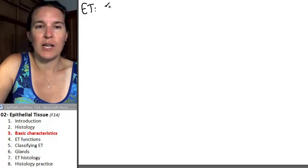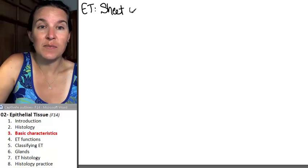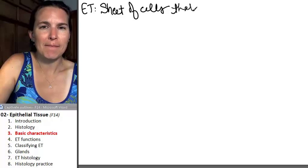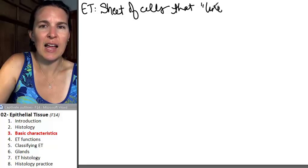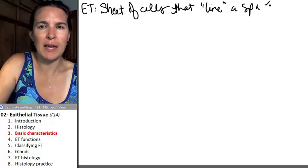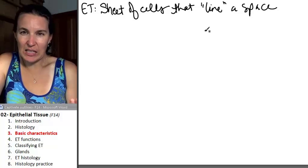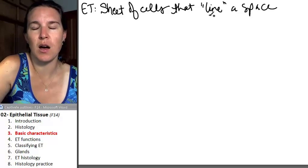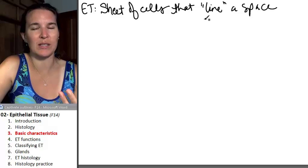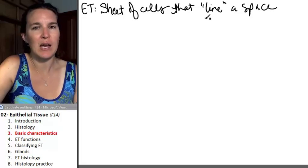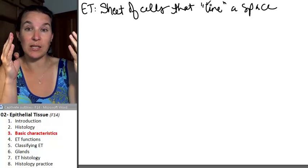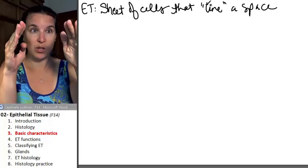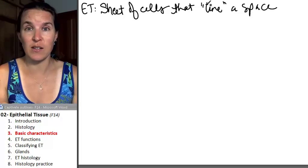Epithelial tissue is a sheet of cells that line a space. I say line a space and put that in quotation marks on purpose because I want you to think about what the word line means. When we're talking about in reference to the space, the epithelial tissue is found lining the edges of the space.